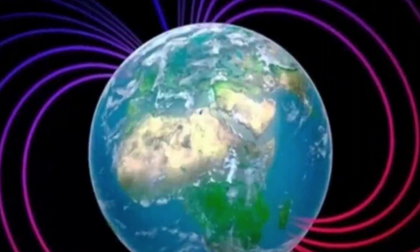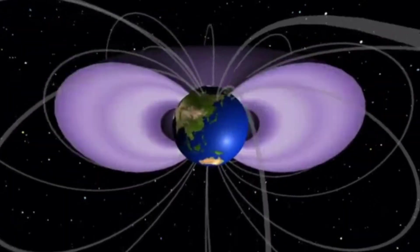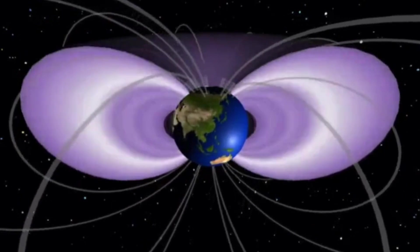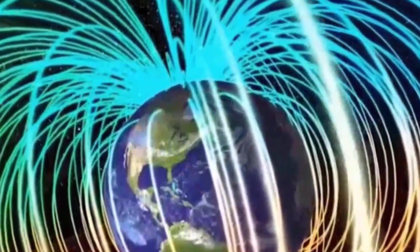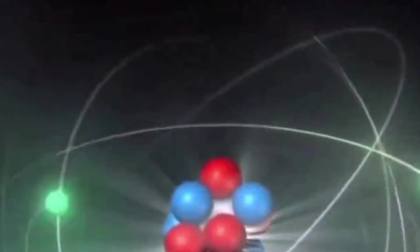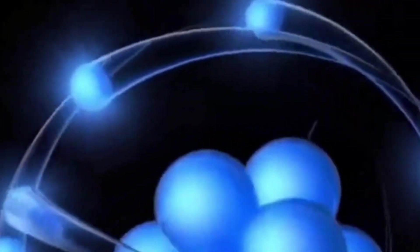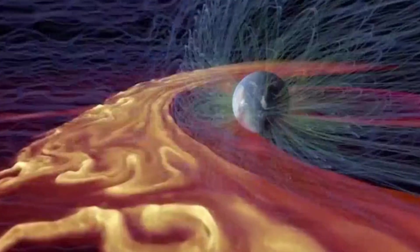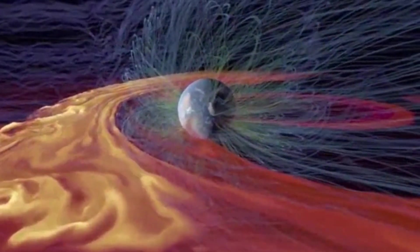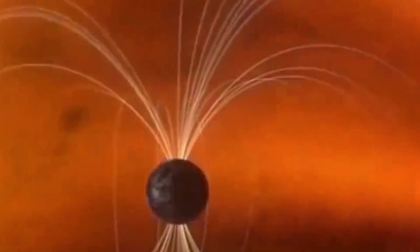And yet, amidst the danger, there would be strange beauty. The weakening shield would allow auroras, those ghostly curtains of green, red, and purple light, to spill across the skies in places that rarely, if ever, see them. Imagine walking through the streets of New York or Paris and looking up to see shimmering northern lights dancing above skyscrapers. For many, it would feel like living in a dream. For scientists though, it would be a reminder of just how exposed we had become. Because the truth is clear: while the skies might dazzle us, our technology and infrastructure would suffer. A magnetic flip isn't just a curiosity of nature, it's a potential disruptor of modern civilization.